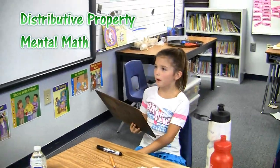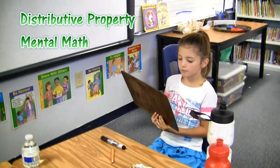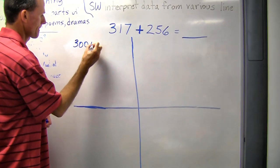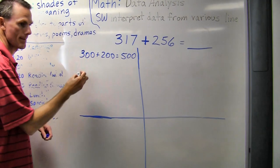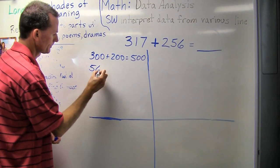I did the distributive property mental math. So I did 300 plus 200 equals 500. 56 plus 17 equals 73.